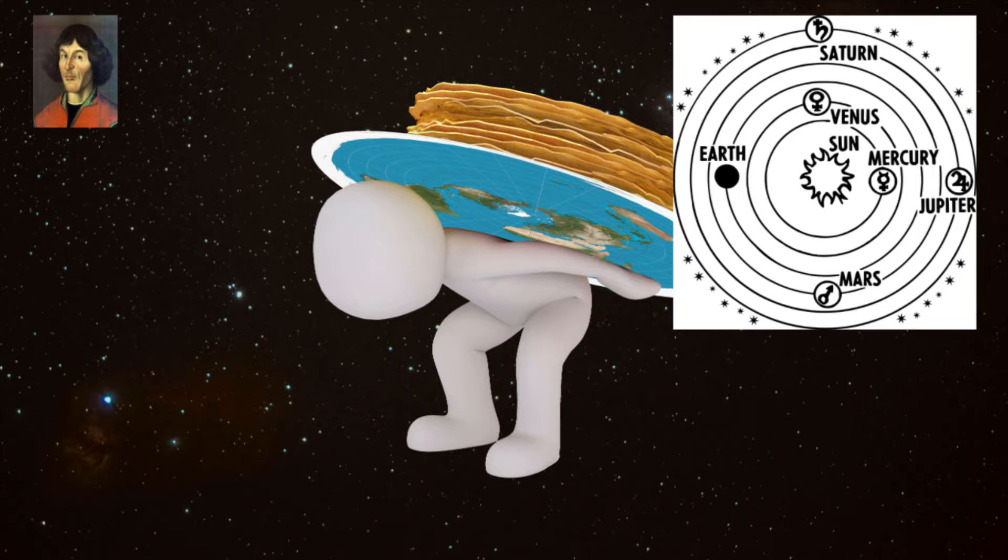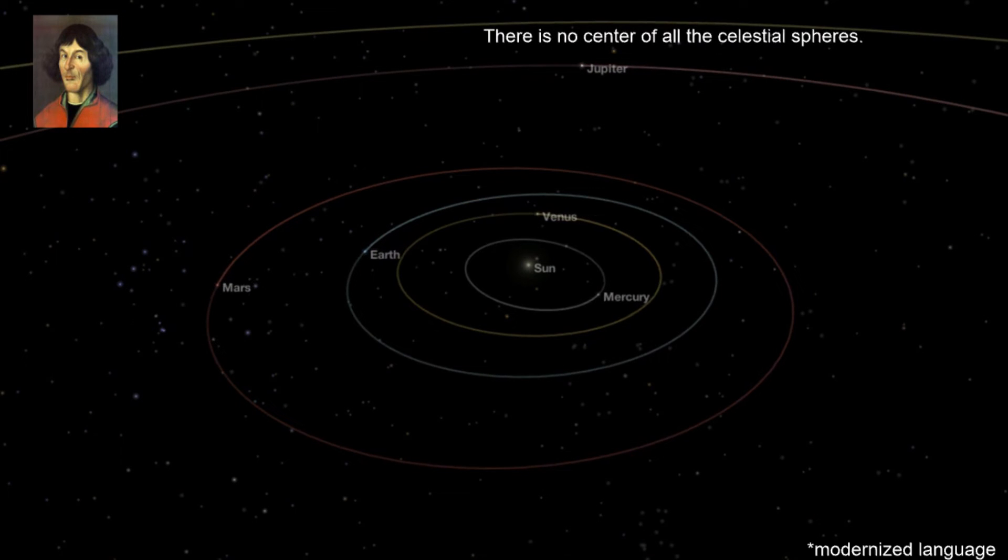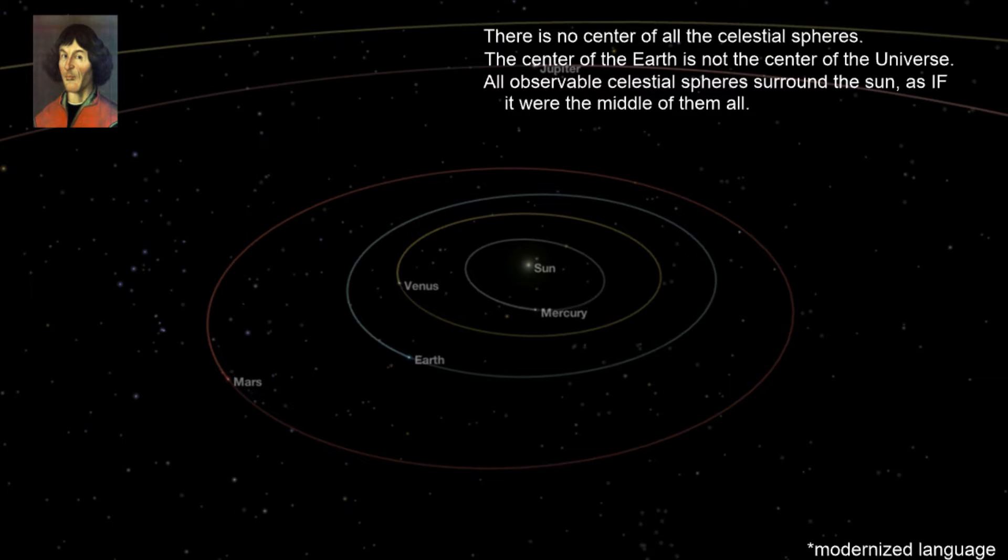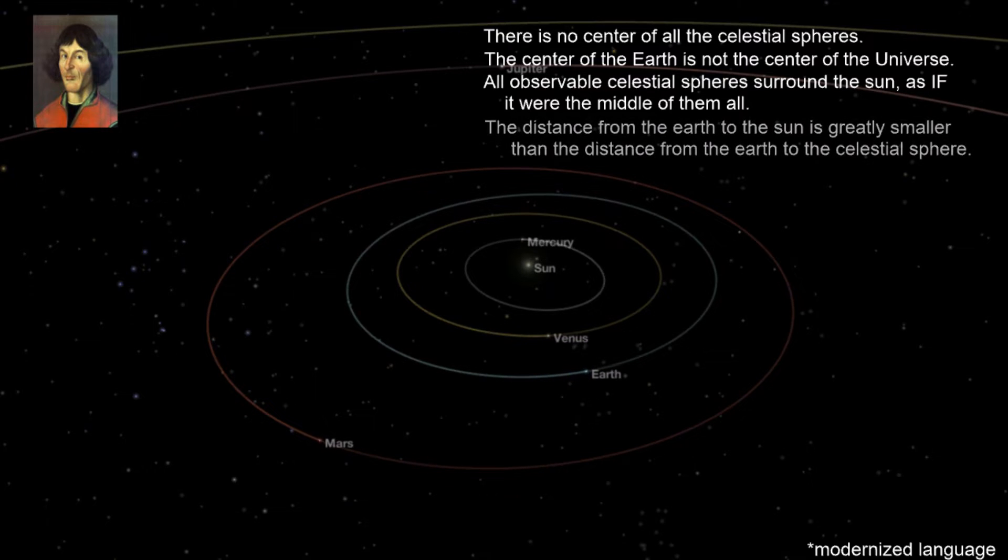With this belief, Copernicus created his seven assumptions that heliocentrism is based on: There is no center of all celestial spheres. The center of the Earth is not the center of the universe. All observable celestial spheres surround the sun as if it were the middle of them all.